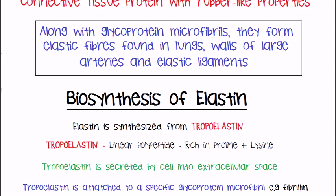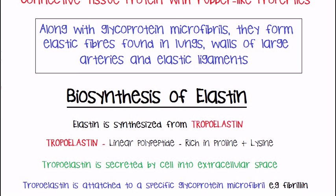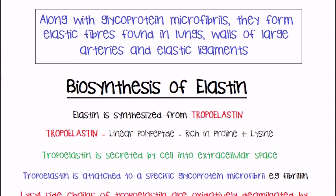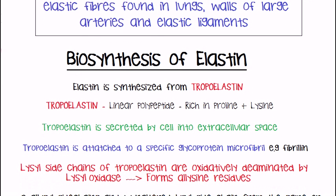Tropoelastin is secreted from the cell into the extracellular space, where it is attached onto a specific glycoprotein microfibril — for example, fibrillin — so it is deposited and attached onto it.